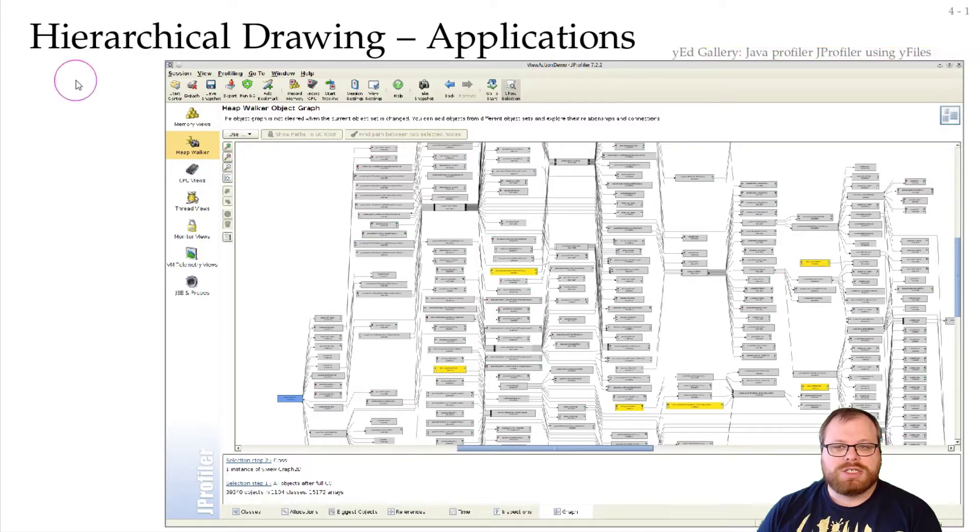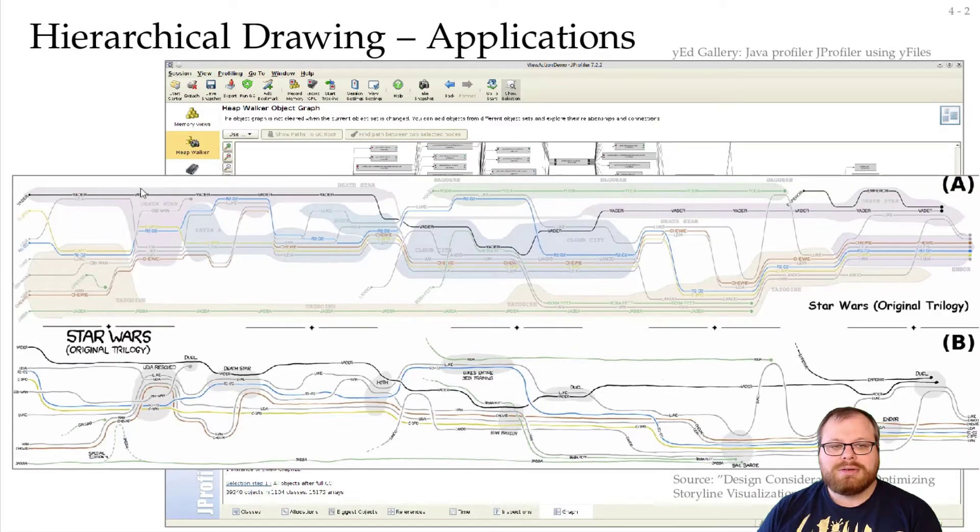There are many applications for this, a few that I will show you here. In the yEd gallery, this gives the output of a Java profiler. Here is a so-called storyline visualization, which is from the original Star Wars trilogy from Design Considerations for Optimizing Storyline Visualization by Tanahashi et al. This is motivated by an XKCD drawing. And here again, this is very close to this, but here the hierarchies are horizontal and not vertical.